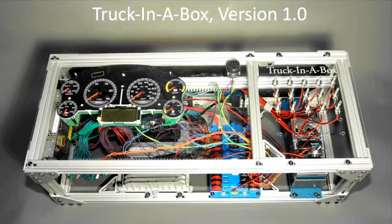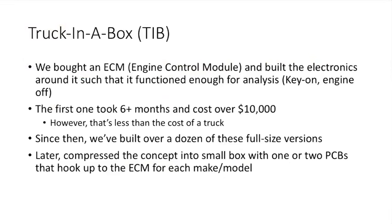We built this thing — we call it the Truck in the Box. It's a bunch of components out of a heavy truck: the engine control module, the instrument cluster, a power distribution unit, a National Instruments C-RIO (we quit using that), and the knobs are a bunch of potentiometers for sensors. The first one took about six months to build and cost about $10,000 — but thanks DARPA — that's still a lot cheaper than the cost of a truck. Since then we've built over a dozen of those full-size ones for different trucks and engines, and later compressed the concept to the size of a circuit board.